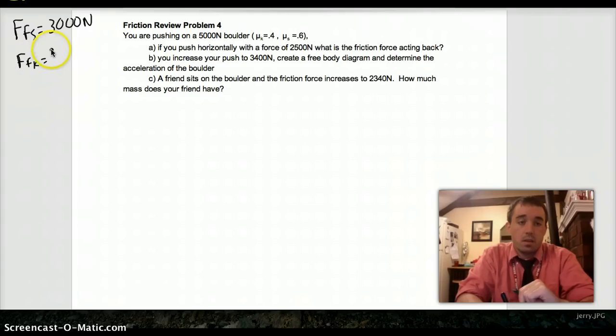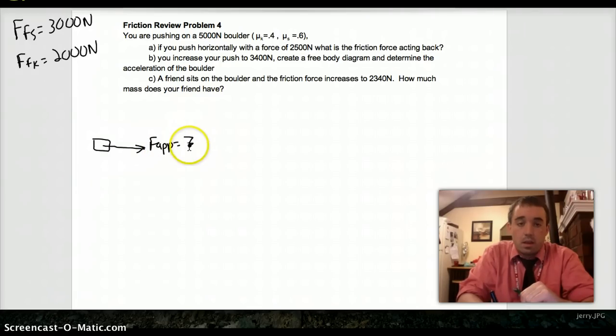And kinetic friction, 2,000 Newtons. So, we're pushing with 3,400. That means we've beaten static friction. That means we are in kinetic friction. So, the only thing acting backwards is our kinetic friction force. We have an applied force of 3,400 Newtons. We have a force of kinetic friction acting back of 2,000 Newtons.